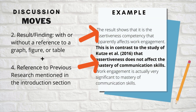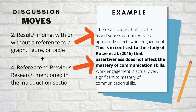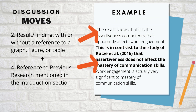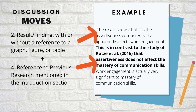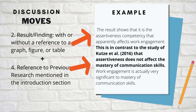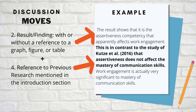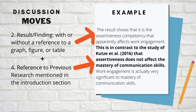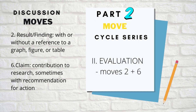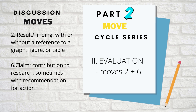For example: 'The result shows that it is the assertiveness competency that apparently affects work engagement. This is in contrast to the study of Kutze et al. 2016, that assertiveness does not affect the mastery of communication skills. Work engagement is actually very significant to mastery of communication skills.'